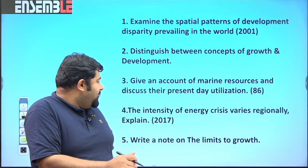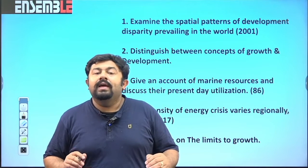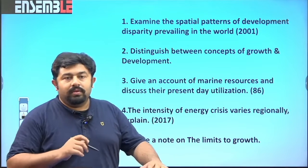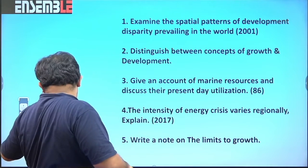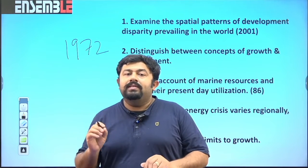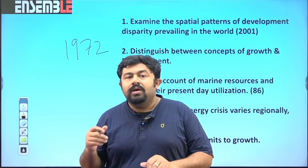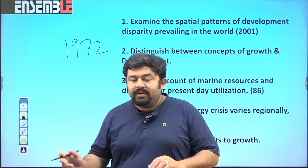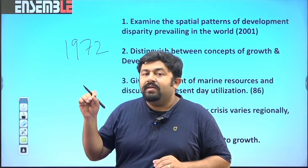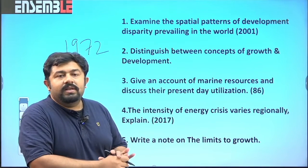Question number five: Write a note on the limits to growth. There was a Club of Rome — a club of intellectual men who prepared a report later published as a book called Limits to Growth in 1972. They predicted the future world through different simulations, taking variables like population, pollution, industrialization, and consumption to model different possible worlds. Questions have been asked on this, such as: What is the present-day applicability of this theory?